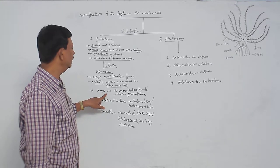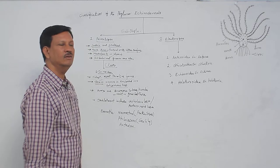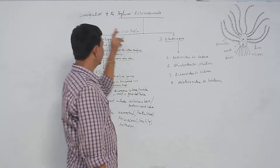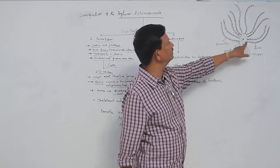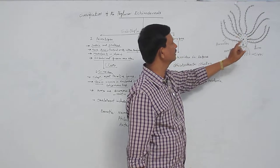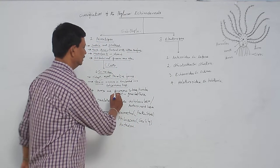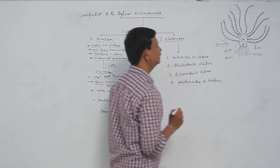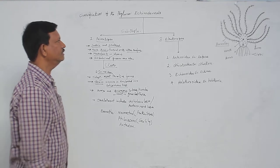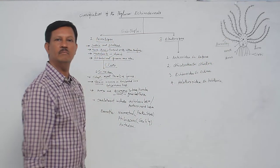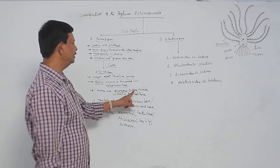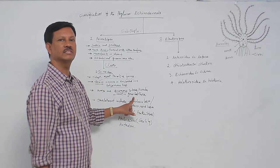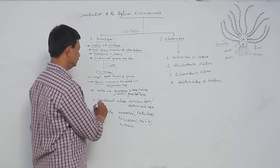The arms are biramous and bear pinnules, which help in food capture. As you can see in the diagram, there are usually five arms in echinoderms, but each arm is biramous — divided into two. These are not single arms; they are divided into two. The pinnules are small hair-like structures present on the body that are flexible and smooth, and they help in capturing food particles from the marine water.